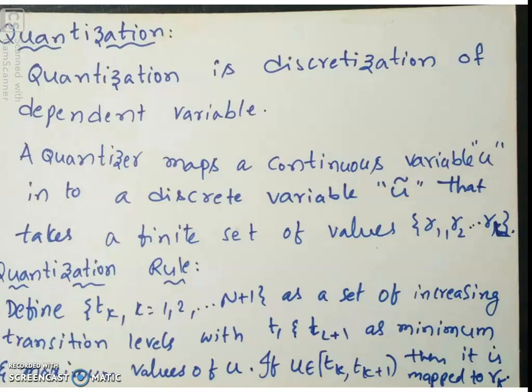So this is sort of a recap for you. Let us move on to the subject. So what does a quantizer do? A quantizer maps a continuous variable u into a discrete variable, let us say u tilde.